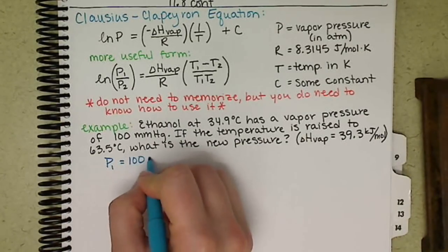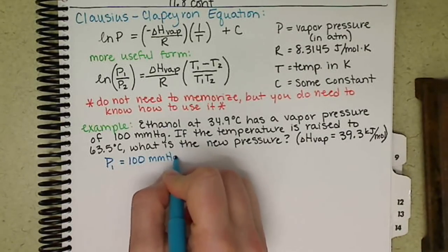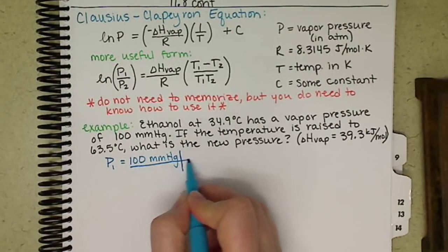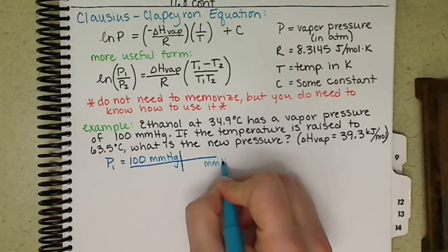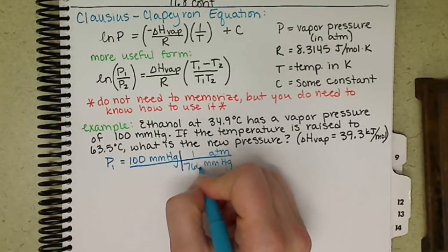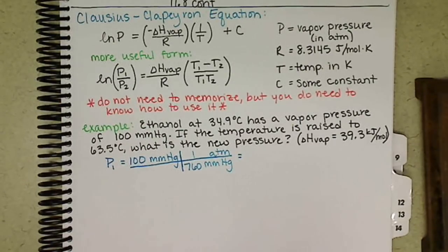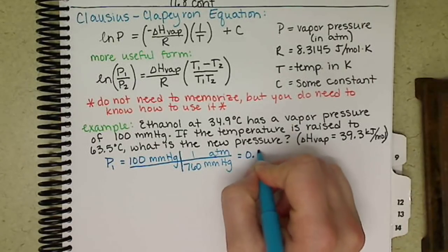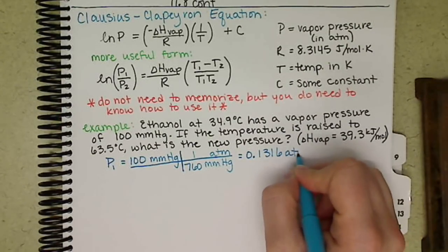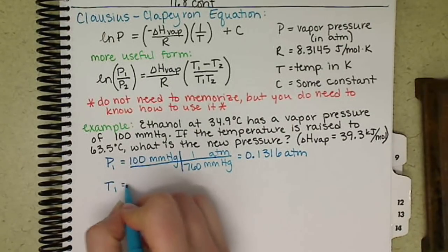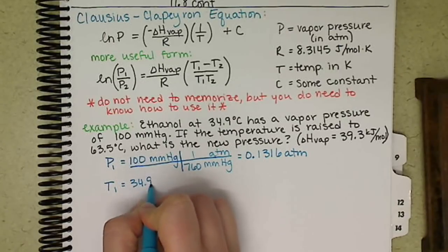So our P1 is 100 millimeters of mercury. We want this in atmospheres, so we convert millimeters of mercury to atmospheres. One atmosphere is 760 millimeters of mercury, giving us 0.1316 atmospheres. T1 is 34.9 degrees Celsius,